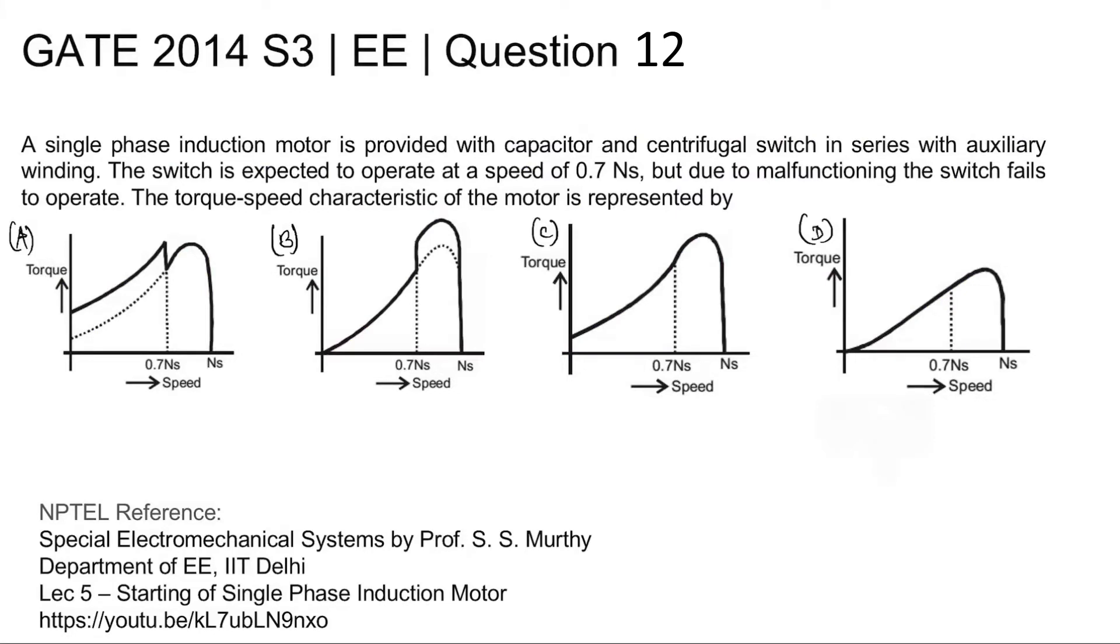A single phase induction motor is provided with a capacitor and with a centrifugal switch in series with auxiliary winding. The switch is expected to operate at a speed of 0.7 ns, but due to malfunctioning, the switch fails to operate. The torque speed characteristics of the motor is being asked.